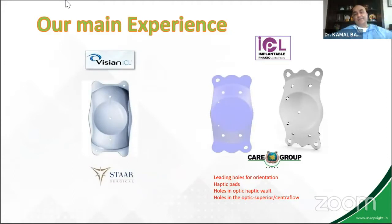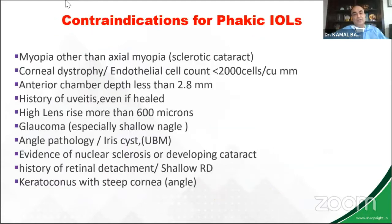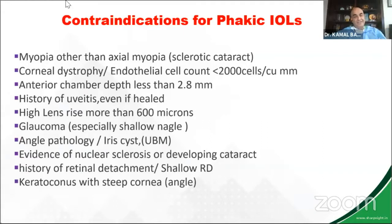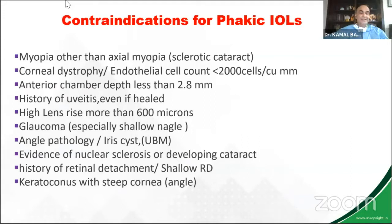The best approach is to mind some features whenever you have myopia which is apart from axial myopia: corneal dystrophy, anterior chamber depth less than 2.8 millimeters — though you can get away with slightly shallower anterior chambers, but it needs a lot of practice and experience. History of old uveitis, posterior synechiae — lens rise: I've realized over time if the lens rises more than 600 microns, which we'll discuss in detail, it is a slight contraindication.